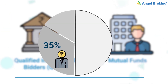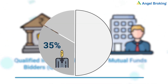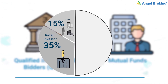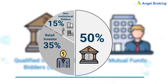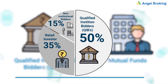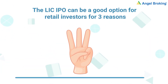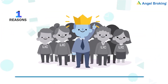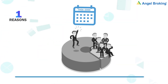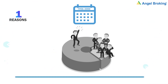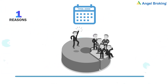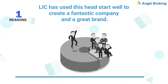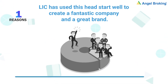In the upcoming LIC IPO, 35% of the shares will be reserved for retail investors, 15% for non-institutional bidders, and 50% for qualified institutional bidders. The LIC IPO can be a good option for retail investors for 3 reasons. First, LIC is a dominant market leader. Because of a government-granted monopoly that lasted 44 years, LIC got a big head start over the other players. LIC has used this head start well to create a fantastic company and a great brand.